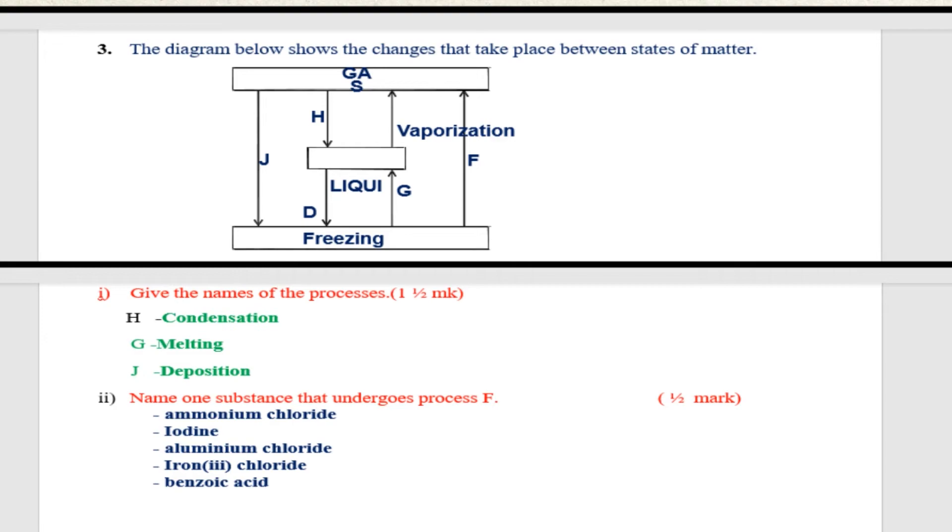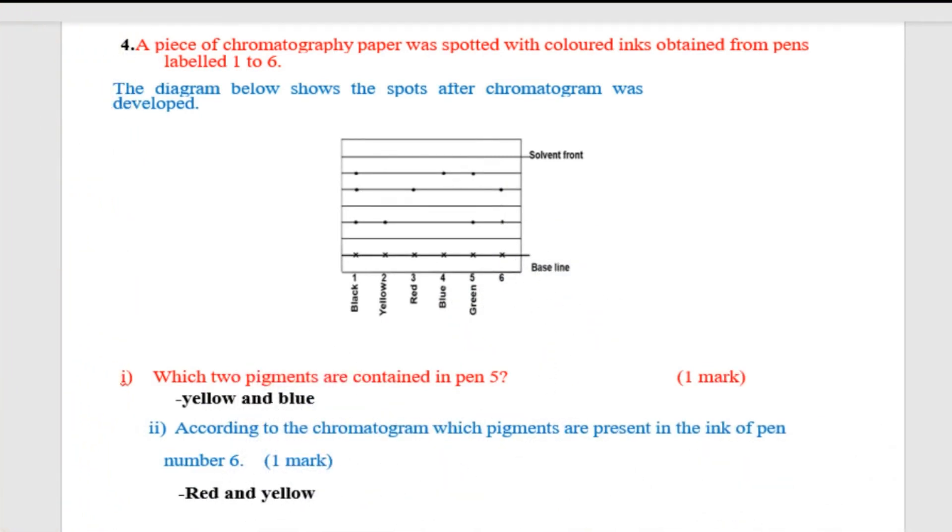Question 4: A piece of chromatography paper was spotted with colored inks obtained from pens labeled 1 to 6. You're told that the diagram below shows the spots after chromatogram was developed. So here you are told we have pen: black, yellow, red ink, blue ink, green ink. We have six of them. That is black, yellow, red, blue, green, and the other one we are not told which color is that. Then we have baseline and then we have solvent front.